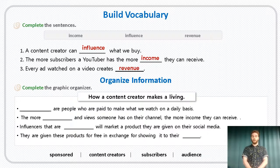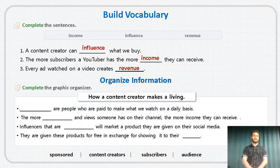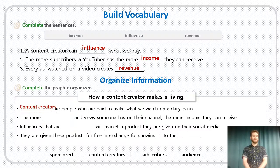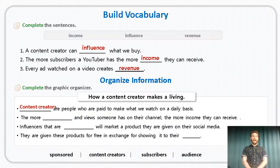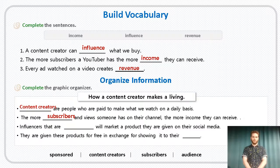All right, let's move on to our final section — organize information. Let's complete this graphic organizer: how a content creator makes a living. Our words here are sponsored, content creators, subscribers, and audience. Number one: these are people who are paid to make what we watch on a daily basis — they are content creators. Moving on, the more subscribers and views someone has on their channel, the more income they can receive.